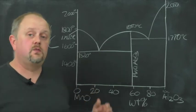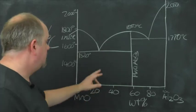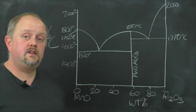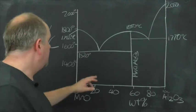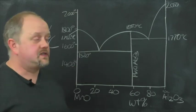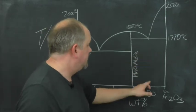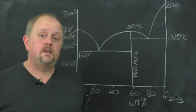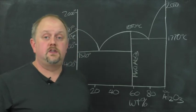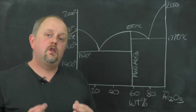In this system we have two eutectic points: E1 at around about 25 weight percent alumina, 1520 degrees C, and E2 here at around about 80 weight percent alumina, and 1770 degrees C.